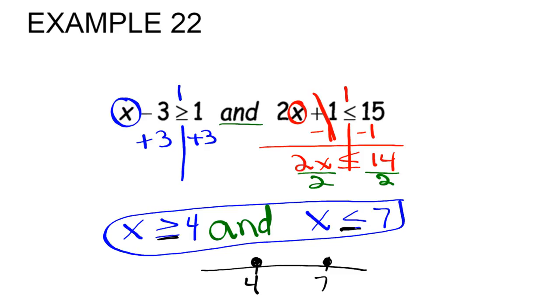And then whenever it's 'and', that usually means they're going in the same direction. And just to check, x is greater than or equal to 4, so that's going to go to the right. This is x is less than or equal to 7, so that's going to go to the left. And they would meet in the in-between.